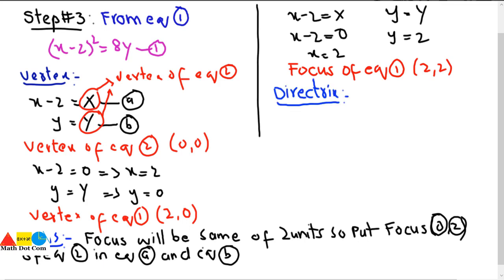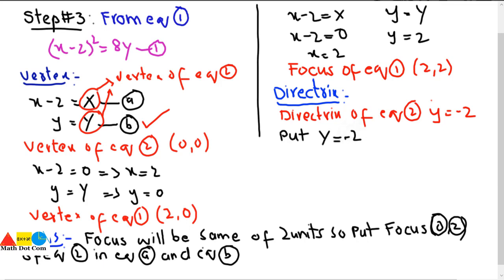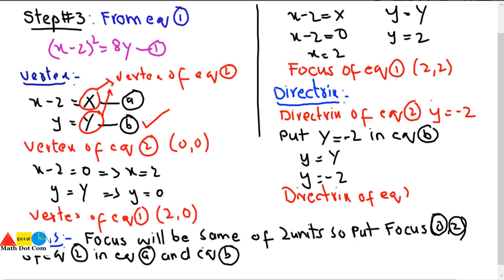For the directrix of equation 1: the directrix of equation 2 was Y equals minus 2. Substituting into equation B — small y equals capital Y — gives small y equals minus 2. So the directrix of equation 1 is y equals minus 2. This is how you find the focus, vertex, and directrix using the substitution method. That is all from today's lecture.